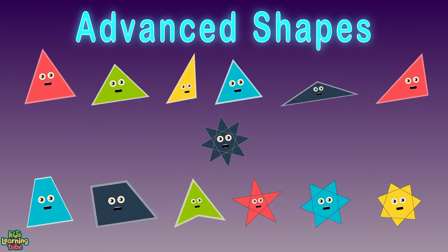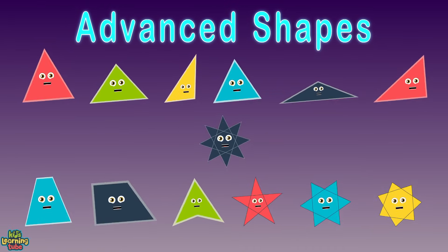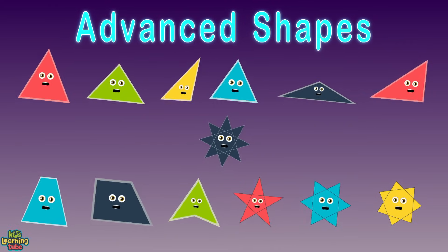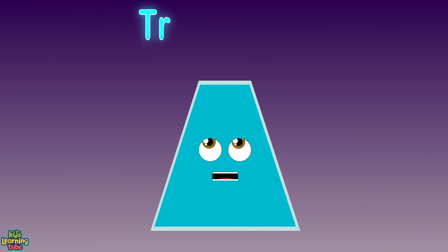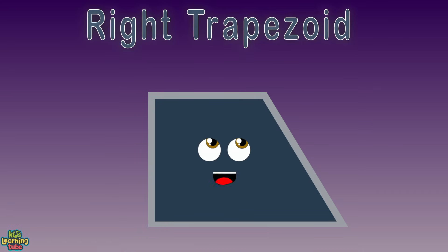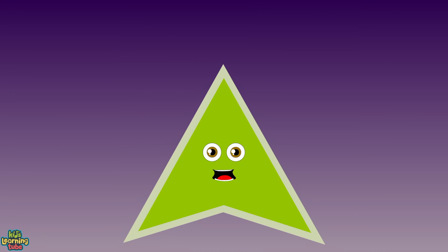A trapezium is me — a convex quadrilateral with at least one pair of parallel sides is me in full. I'm a right trapezoid. I may make your brain tangle — I'm a trapezoid with two right angles.